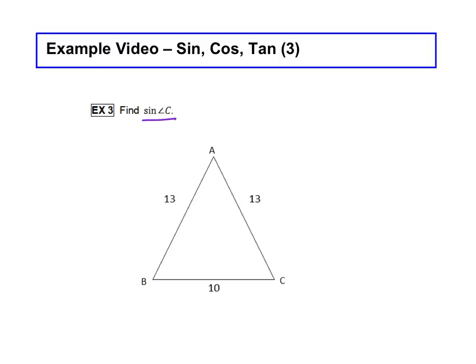Because the two sides here, the 13 and the 13, are the same length, we call this an isosceles triangle. If you have an isosceles triangle, here's what you can do. From angle A up here, where the two congruent sides meet, you can draw an altitude.